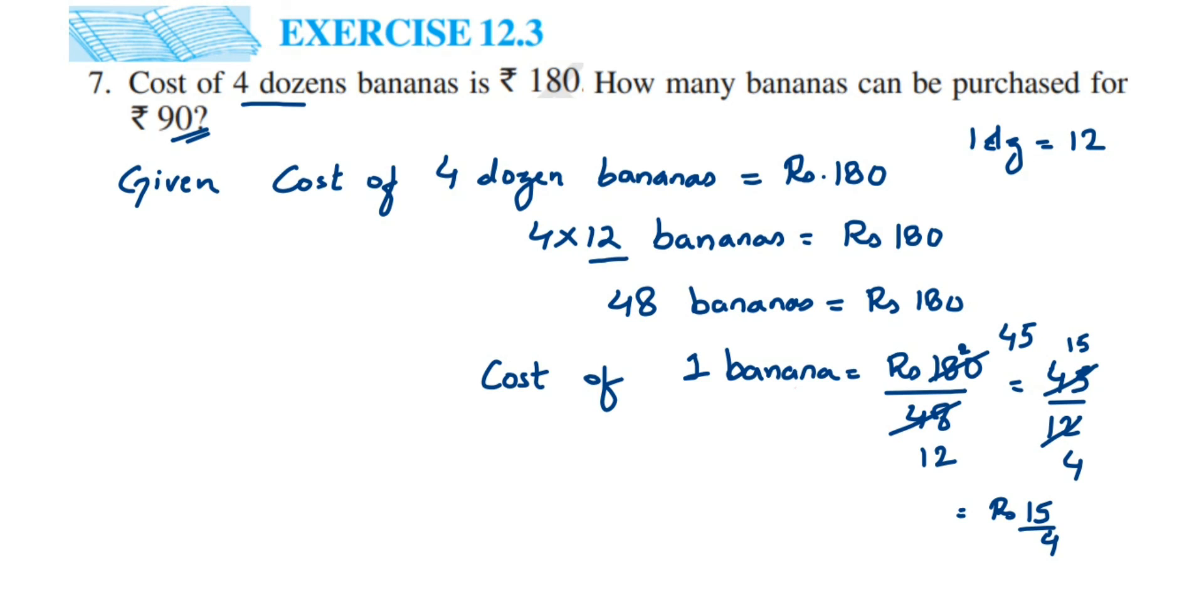You can convert 15 by 4 in decimal form if you want. Therefore, number of bananas for 90 rupees will be equal to 90 divided by 15 by 4. Here you're dividing a fraction by a fraction. When dividing two fractions, the first number will remain same - that is 90. The division will become multiplication, and you have to take the reciprocal of second number.